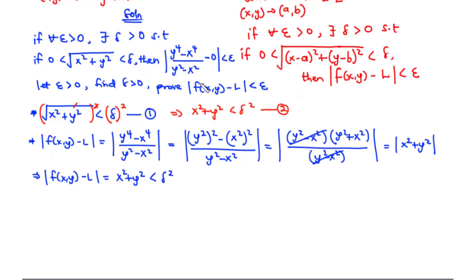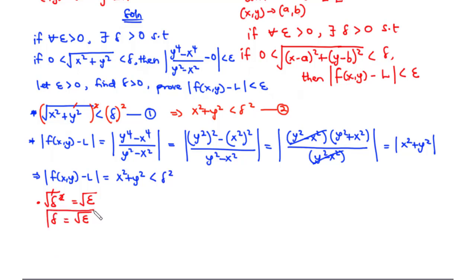Considering the expression and looking at equation 2, we have x² + y² on both sides. Therefore, since the absolute value of f(x, y) minus L equals x² + y², and x² + y² is less than delta², we can say similarly that x² + y² here is also less than delta². Since we need to prove that the absolute value of f(x, y) minus L is less than epsilon, the extreme right epsilon equals delta². Therefore, we have delta² equal to epsilon.